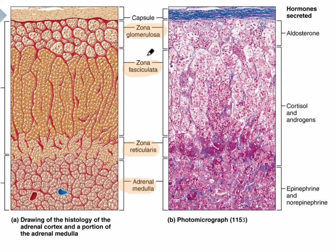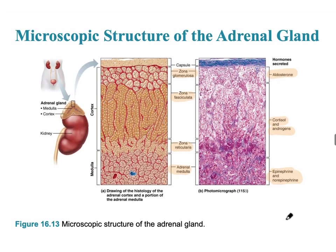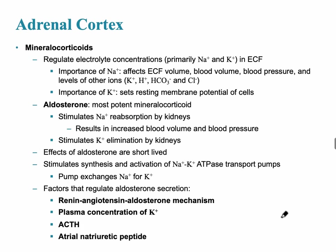The outer layer, the zona glomerulosa, produces mineralocorticoids and the major mineralocorticoid is aldosterone, which causes reabsorption of sodium. The zona fasciculata produces glucocorticoids and the major glucocorticoid is cortisol. The zona reticularis produces androgens. The adrenal medulla, which is part of the sympathetic nervous system, produces catecholamines — epinephrine and norepinephrine — the fight or flight response. When activated, epinephrine and norepinephrine are released into the bloodstream.